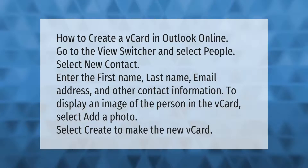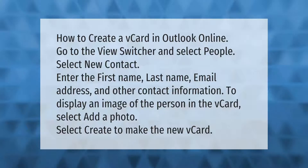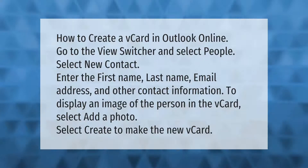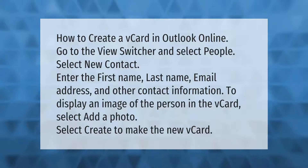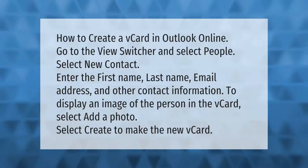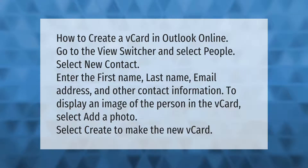How to create a vCard in Outlook Online: go to the view switcher and select People, select New Contact, enter the first name, last name, email address, and other contact information. To display an image of the person in the vCard, select Add a Photo. Select Create to make the new vCard.